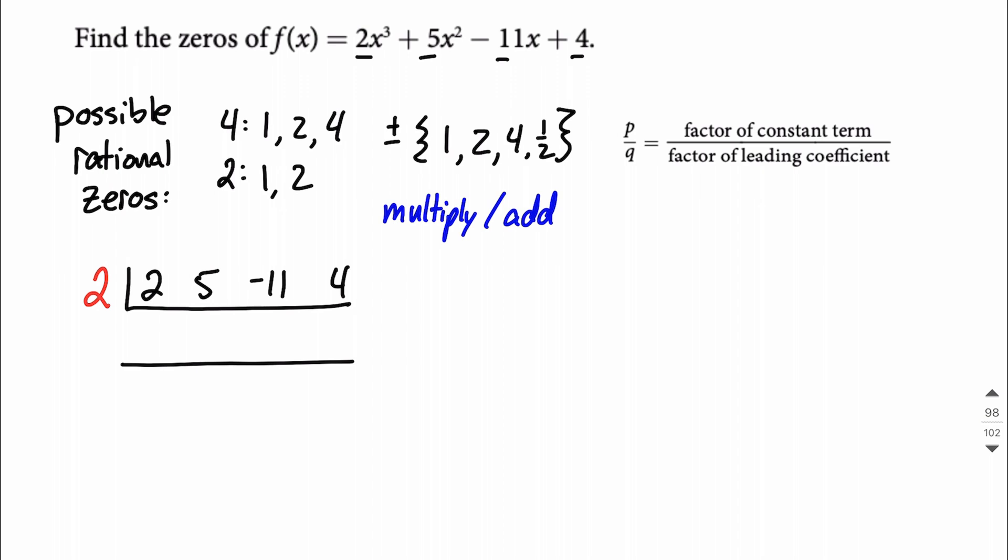So this 2 comes down, we're going to multiply by the red 2 out in front, by that value at the bottom, so 2 times 2 makes 4. Now we add vertically, so 5 plus 4 makes 9. Then we're back to multiply, so 2 times 9 makes 18. Add, negative 11 plus 18 makes positive 7. Multiply, 2 times 7 makes 14. And add, we end up with 4 plus 14 makes 18.